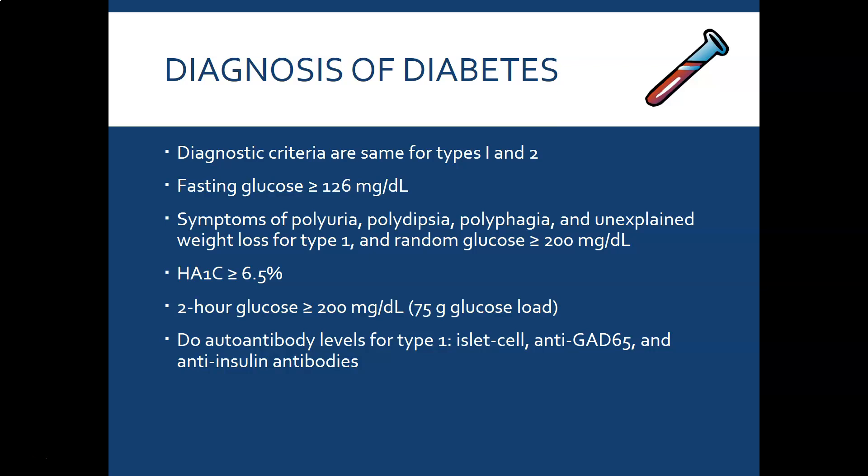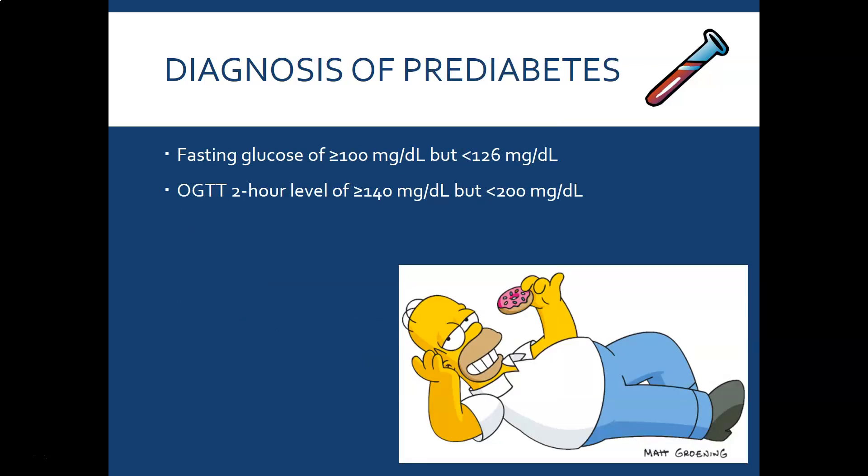For Type 1, you can also check autoantibody levels — islet cell antibodies, anti-GAD65, and anti-insulin antibodies. For pre-diabetes, the fasting glucose will be abnormal — greater than 100 but less than 126 mg/dL — and the two-hour oral glucose tolerance test result will be greater than 140 but less than 200 mg/dL.